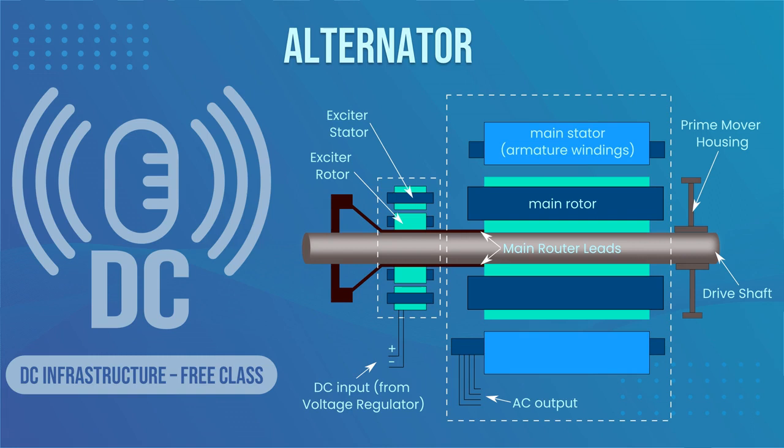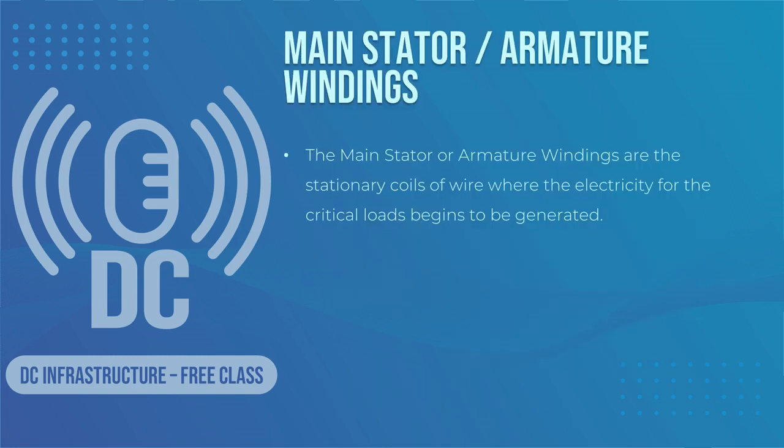When a generator is described as self-excited, it means that the electricity used to create the electromagnetic field is created within the alternator itself, thereby allowing the alternator to produce large amounts of electricity with no other energy than what is provided by the prime mover. The main stator or armature windings are the stationary coils of wire where electricity for the critical loads begins to be generated. The characteristics of the alternating current produced are related to the quantity and geometry of the coil windings, with a large variety of configurations available to deliver combinations of ampacity and voltage requirements.